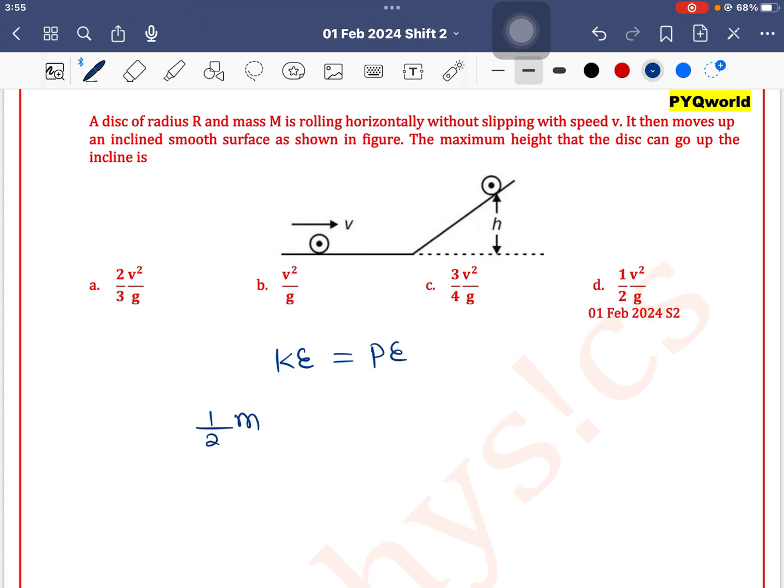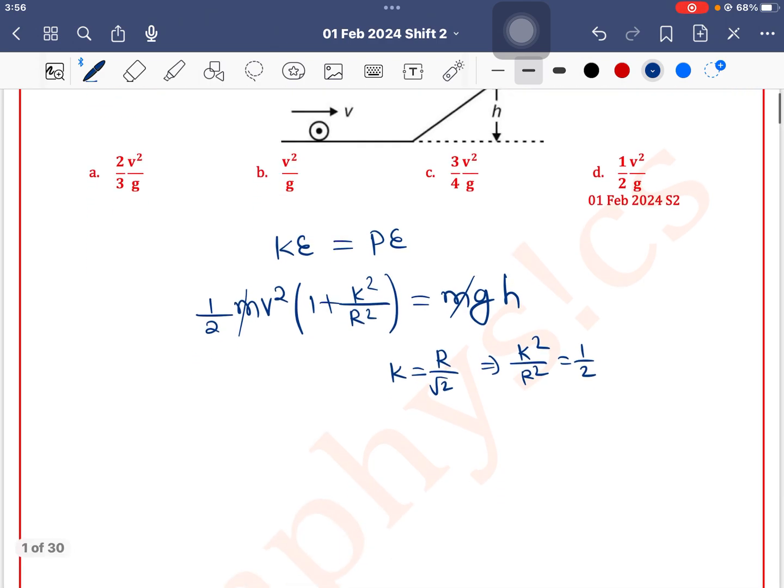For kinetic energy of a body performing rolling motion: ½mv²(1 + k²/R²) equals potential energy mgh. Mass m cancels out. For a disk, k = R/√2, or we can write k²/R² = 1/2.